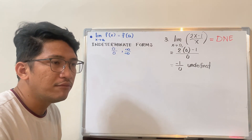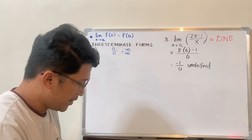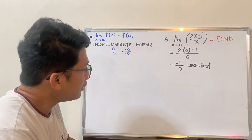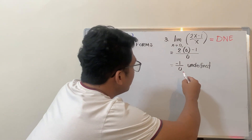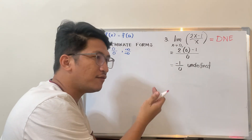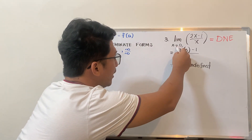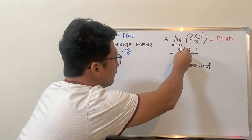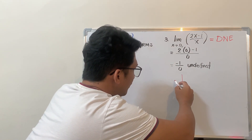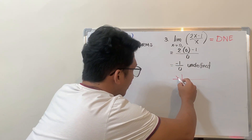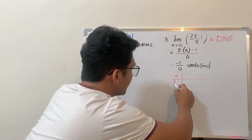Actually, the best way in solving limits is the table of values. This is the original and safest solution. But somehow it's a bit tedious and the solution is long. If you will try to check using table of values, we look for values from the left and also from the right. So x is approaching zero, and we consider values for x and f(x).